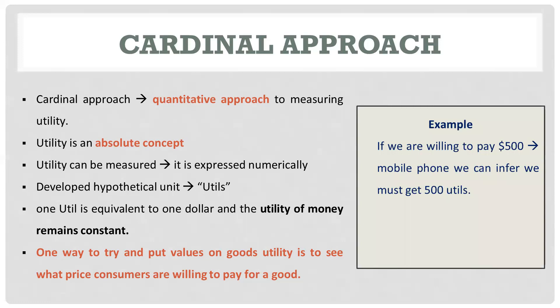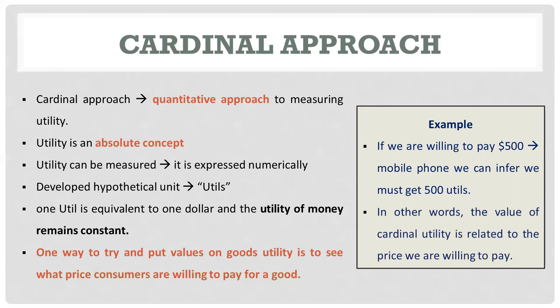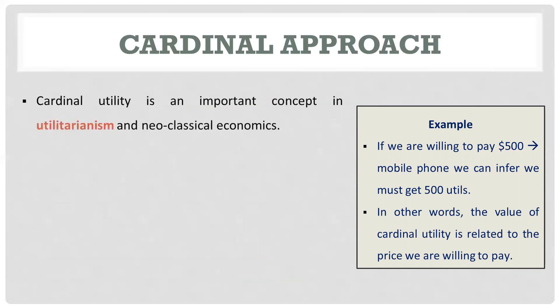Suppose we want to pay $500 for a mobile phone. We can infer that we will get 500 utiles after purchasing this mobile. In other words, the value of cardinal utility is related to the price we are willing to pay for a particular commodity.